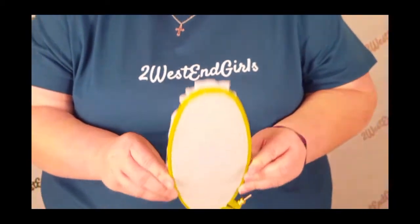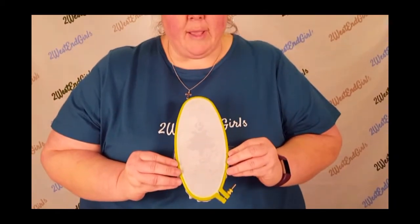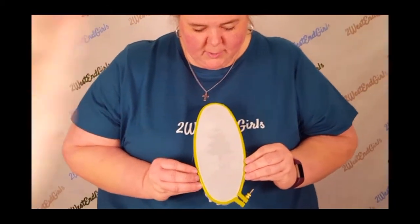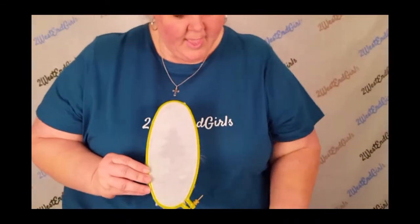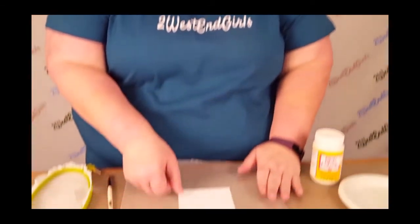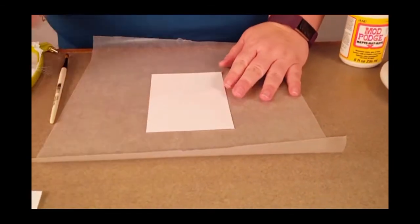To get started on your cards, I'm doing a one-sided card on cardstock paper. I've got a piece of wax paper here to put under it so I don't make a big mess. You're gonna lay your cardstock paper down.